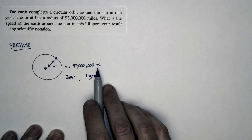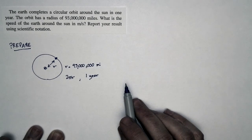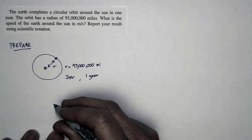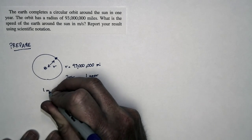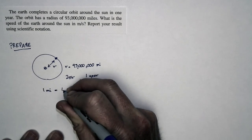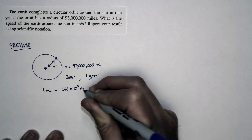But we don't want it in miles per year. We want it in meters per second. So we've got to do a unit conversion. The unit conversions we'll make: one mile equals 1.61 times 10 to the third meters. That'll be useful.